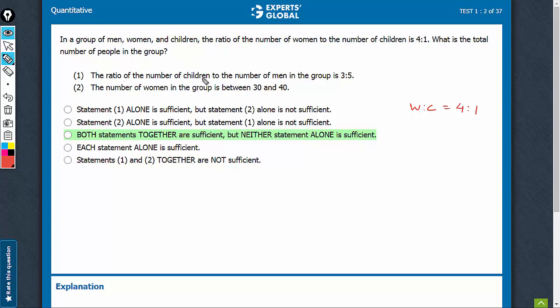Statement 1, children to men is 3 is to 5. So, statement 1 only tells us that C is to M is equal to 3 is to 5. Of course, it's only in ratios, we have no absolute numbers so far, so it's not going to be sufficient. The question is asking the absolute number, so we need the absolute number somewhere.